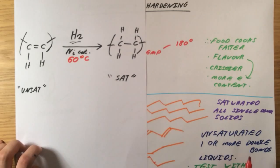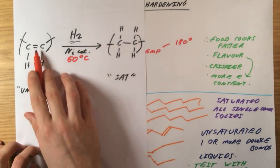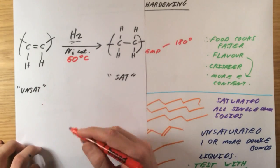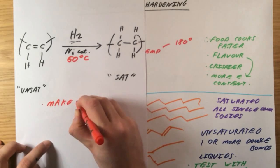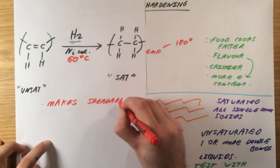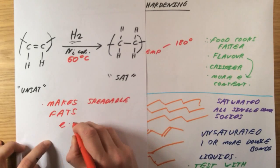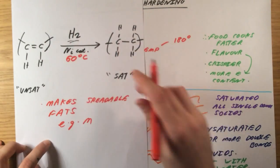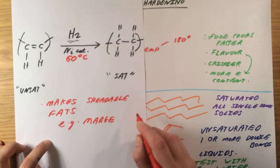So I've said before that unsaturated fats are generally liquids. Saturated fats are generally solids. If you only get rid of a few of the double bonds, and not all of them, you can make a solid fat, but one that spreads very easily. So it makes spreadable fats. And a good example of this is margarine. This is actually how margarine is made. You add hydrogen to an unsaturated fat using a nickel catalyst and 60 degrees C.